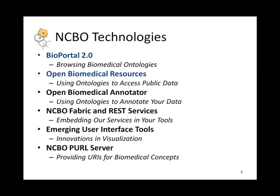So for example, if I have any particular abstract or free text that I want the Bioportal to identify concepts within that free text, I can pass it to my annotator and it will identify the associated concepts that are found in that free text. We have the NCBO Fabric and REST services,